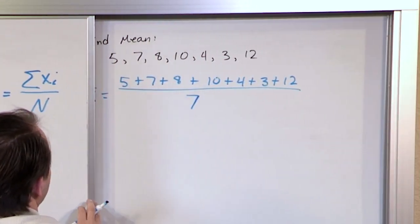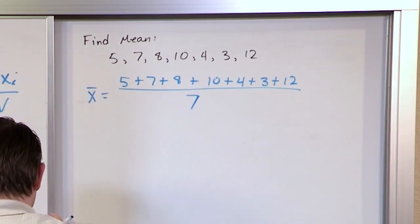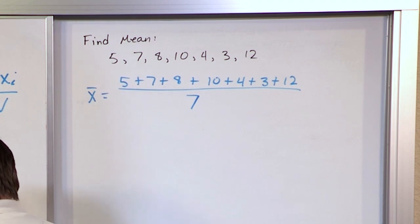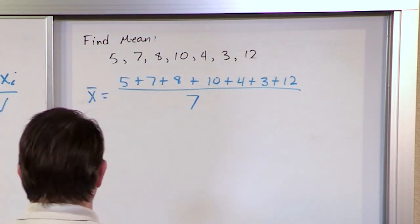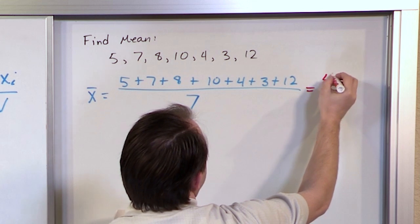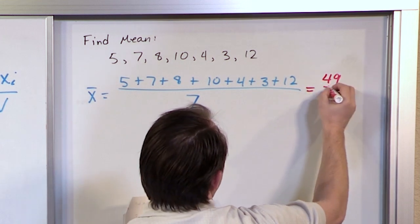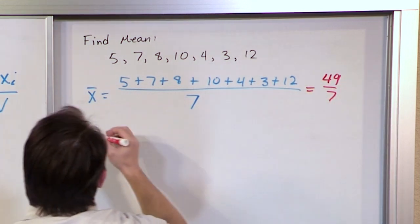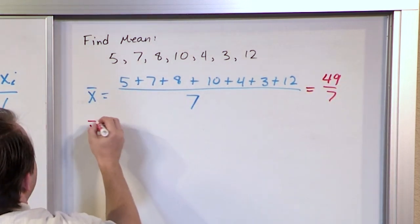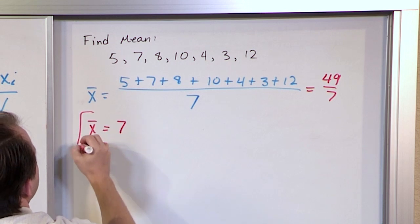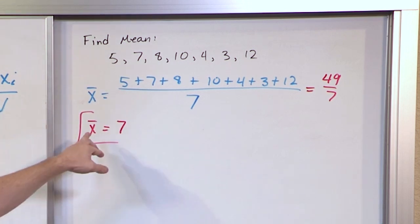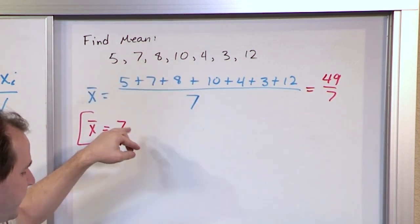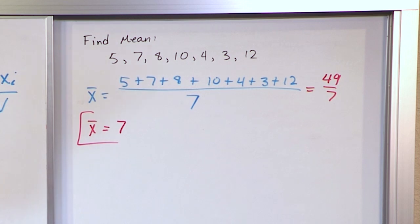So that's exactly what we have done here. When we do this, on the top you'll get 49 over 7. So x̄ is 7. This is what you would circle on your paper — the sample mean of this set of samples is 7.